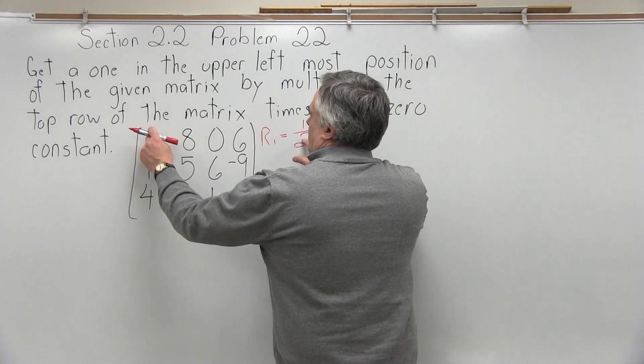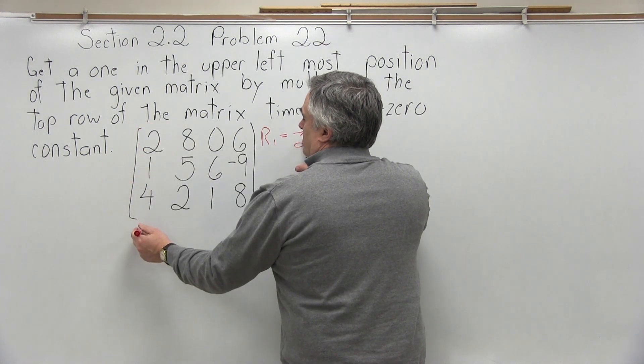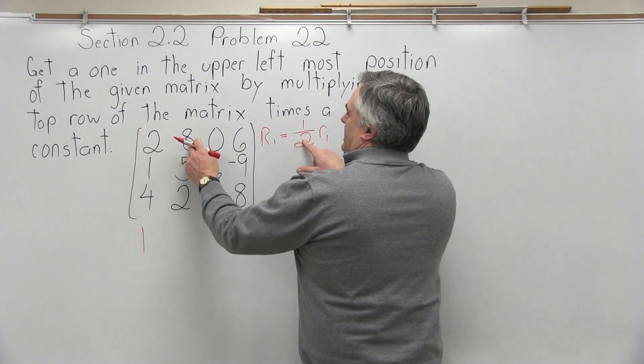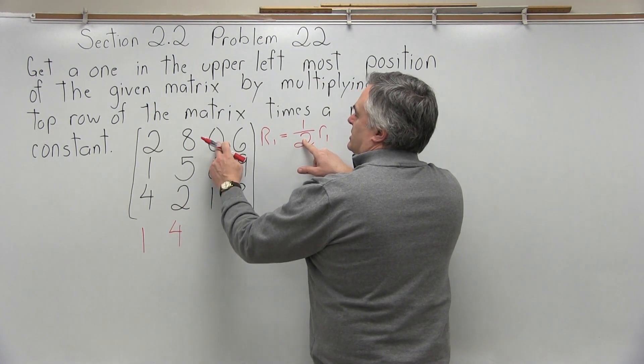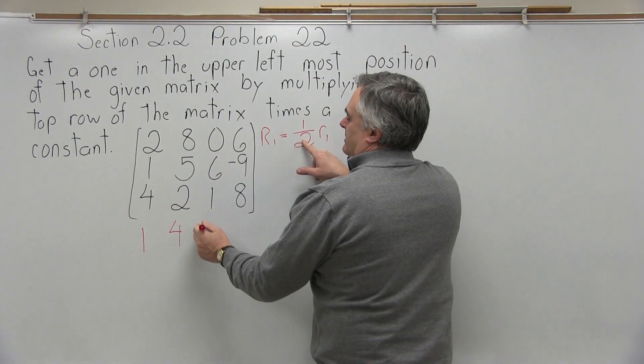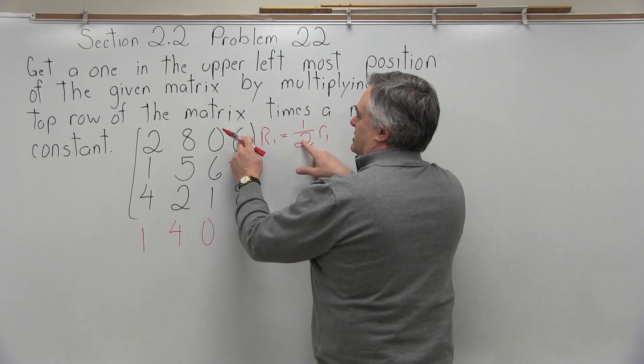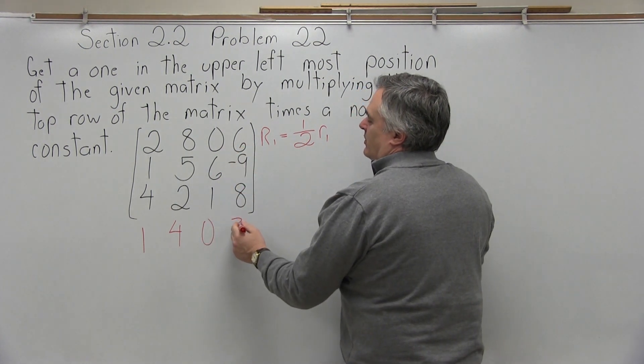So the first position we're going to have 2 divide by 2, that's 1. The next position, 8 divide by 2, that's 4. The next position, 0 divide by 2, that's 0. And finally the last position, 6 divide by 2, which is 3.